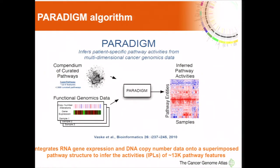In terms of pathways, we're going to use an algorithm known as Paradigm that's been used in most of the marker papers of TCGA. This integrates RNA gene expression data with DNA copy number data, superimposes this on a super-pathway to infer activities which we refer to as inferred pathway links, or IPLs, encompassing over 13,000 pathway features which can be displayed in a heat map or analyzed for differences between tumor subsets.